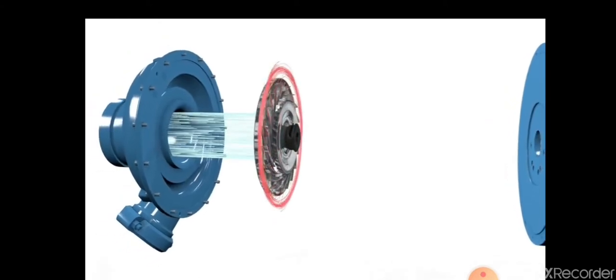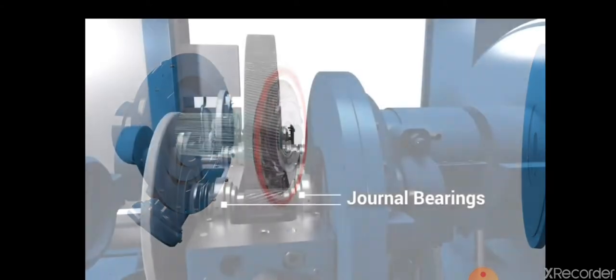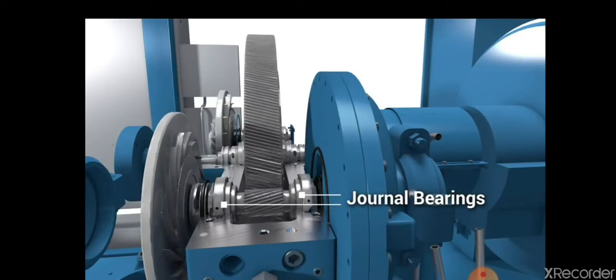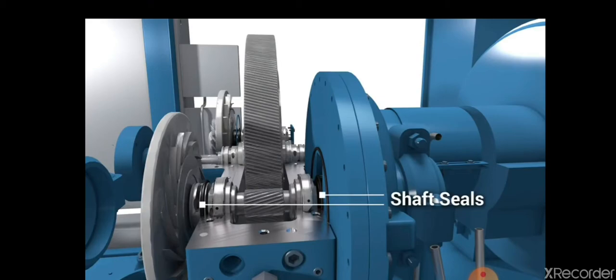In addition to the impellers and radio diffusers, the rotor assembly consists of a pinion supported by two self-centering tilting or flexure pad journal bearings.